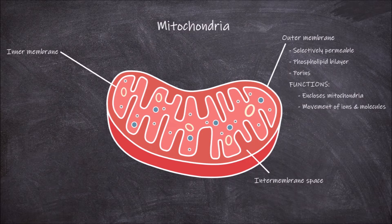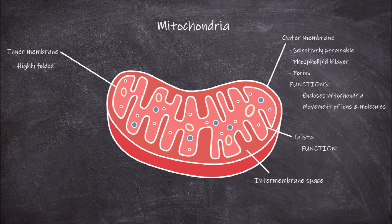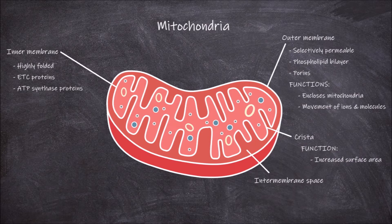The inner mitochondrial membrane is found inwards of the outer membrane. This membrane is highly folded; the folds in the membrane are called cristae. This folding functions in increasing the surface area of the inner mitochondrial membrane. This membrane is covered in proteins essential for several functions, including the proteins involved in the electron transport chain and the ATP synthase protein.